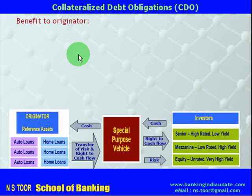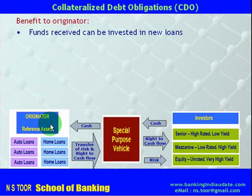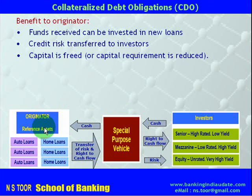What are the benefits to different parties? For the originator: first, funds received can be invested in new loans, as the originator transfers loans to the special purpose vehicle and receives cash in return. Second, the credit risk in these assets is transferred to the investors. Third, the capital required to create these assets is freed up, reducing the originator's capital requirement.